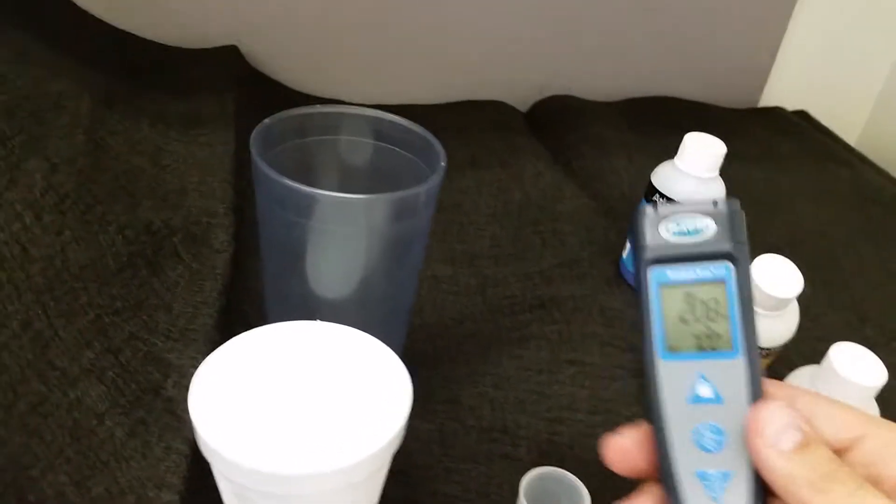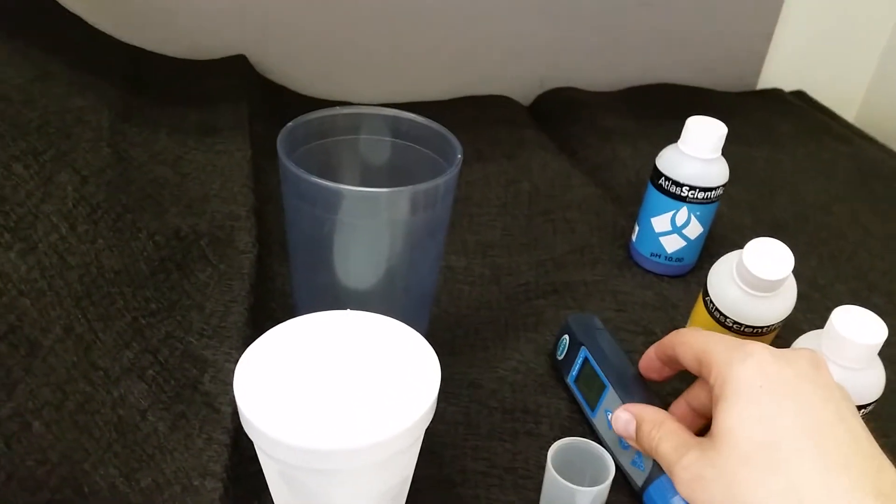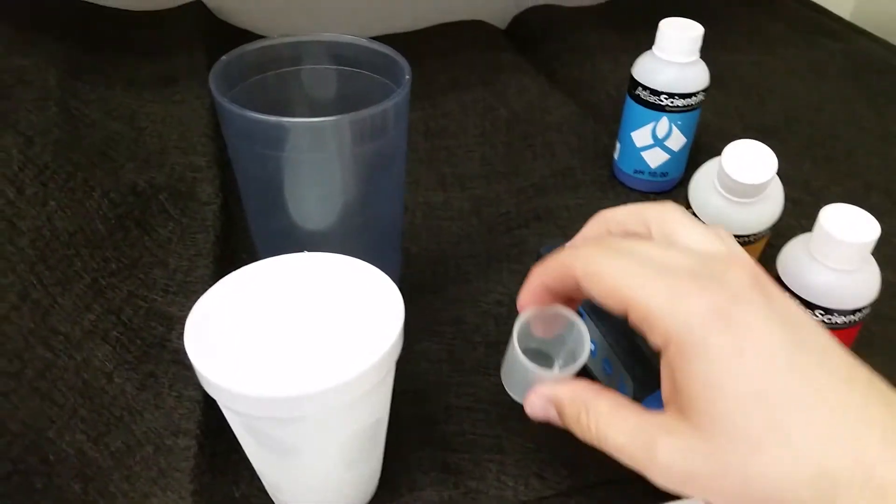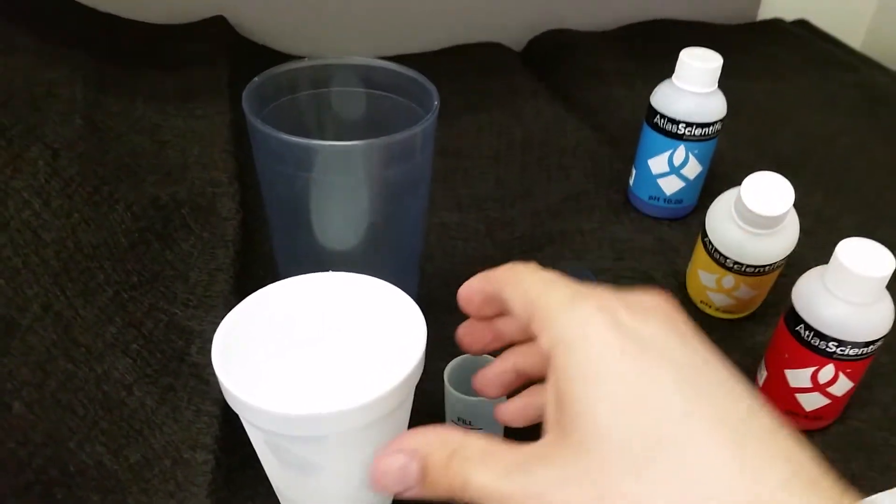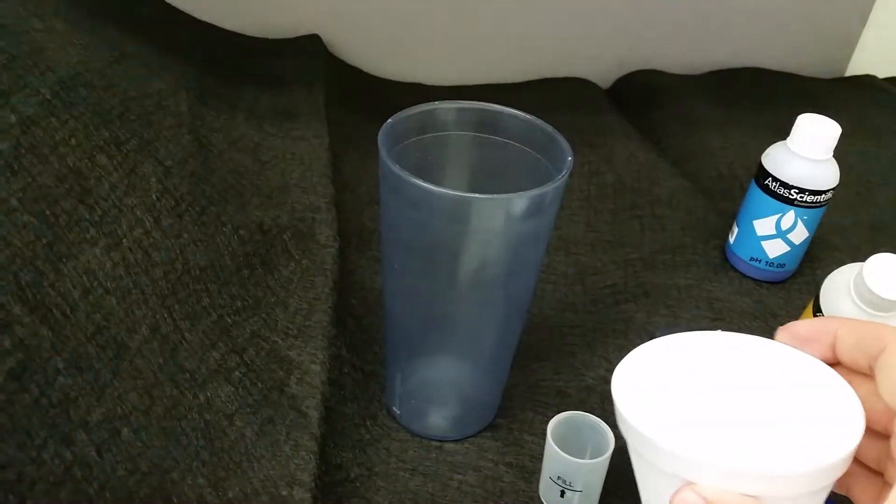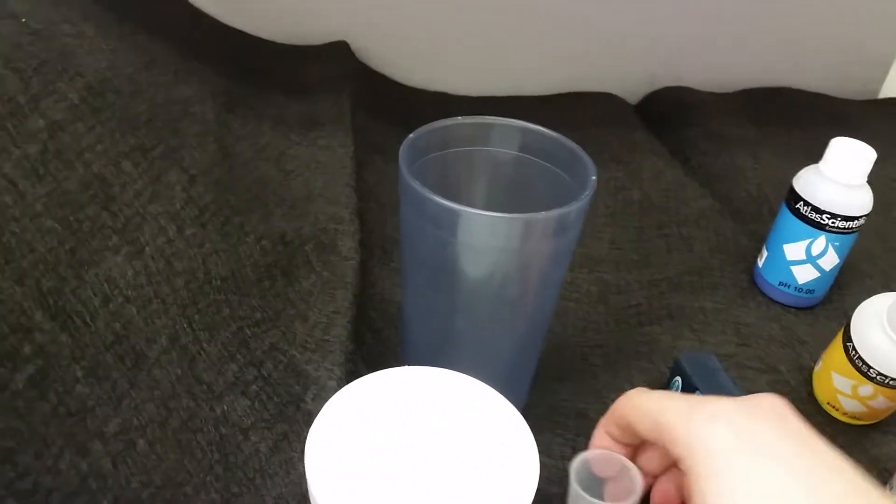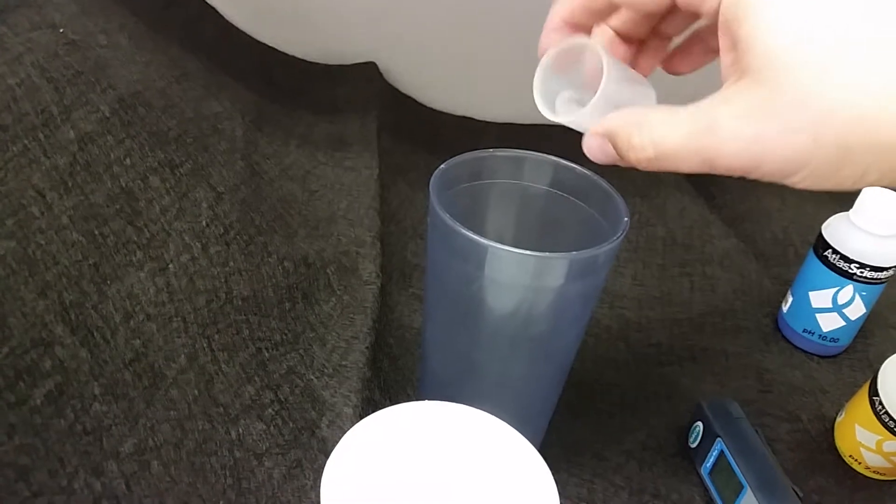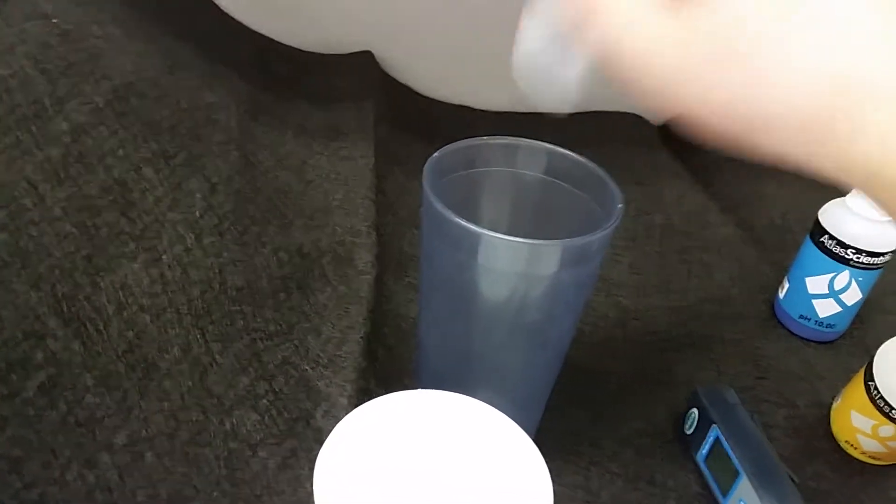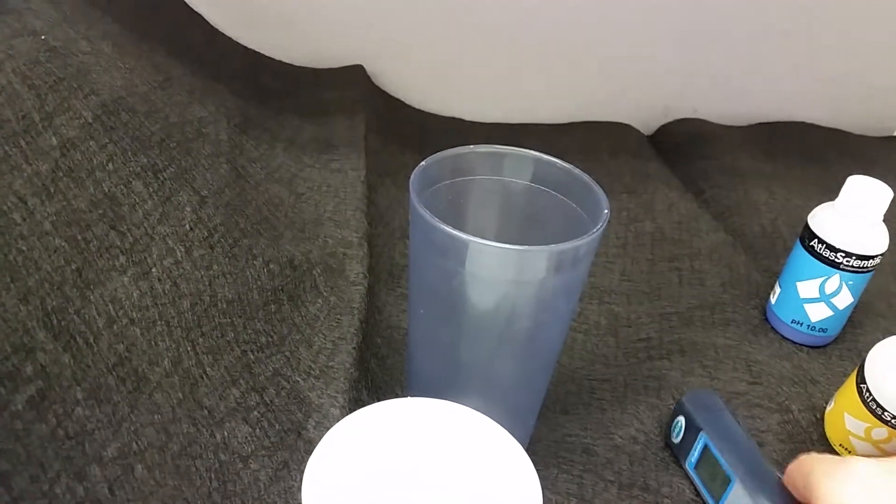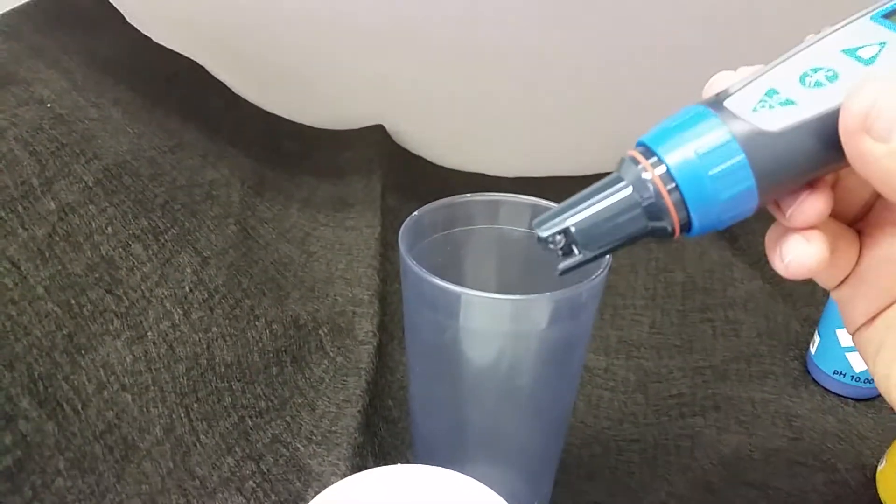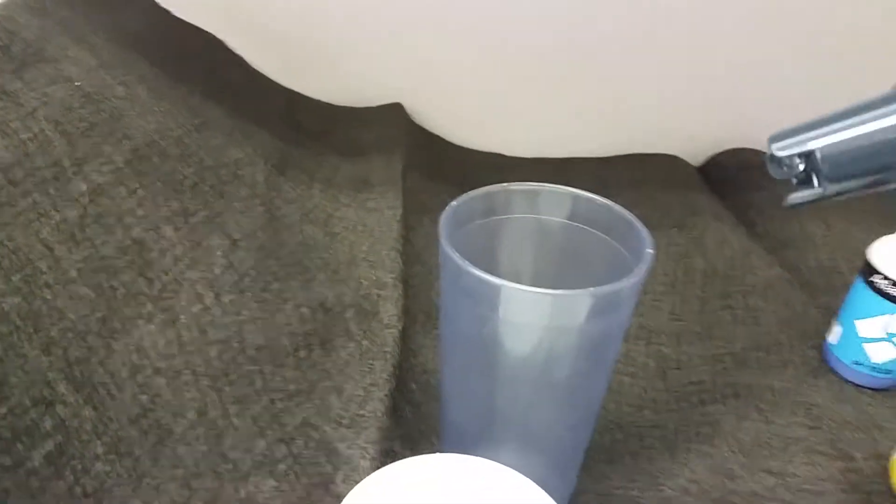Next, since we don't see a C1 there, you want to rinse this with the deionized water. Now ideally, if you're in a lab or something, you have glass beakers and whatnot. I just use a little DI water, rinse it, just clean it off.